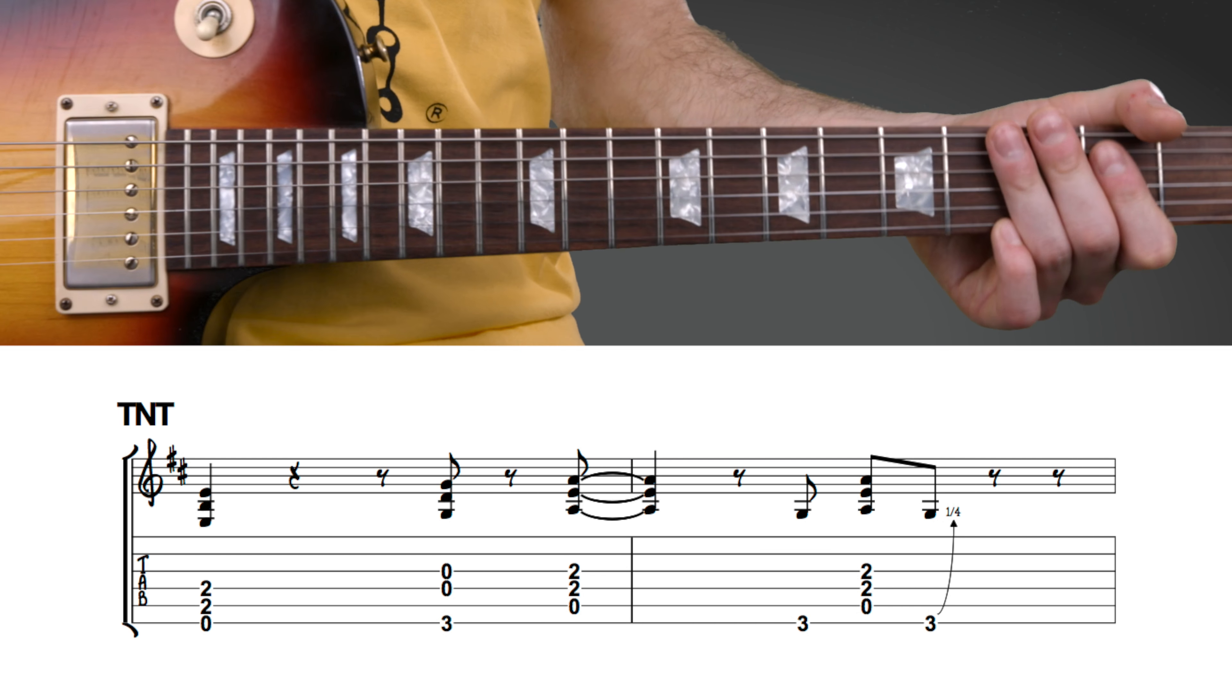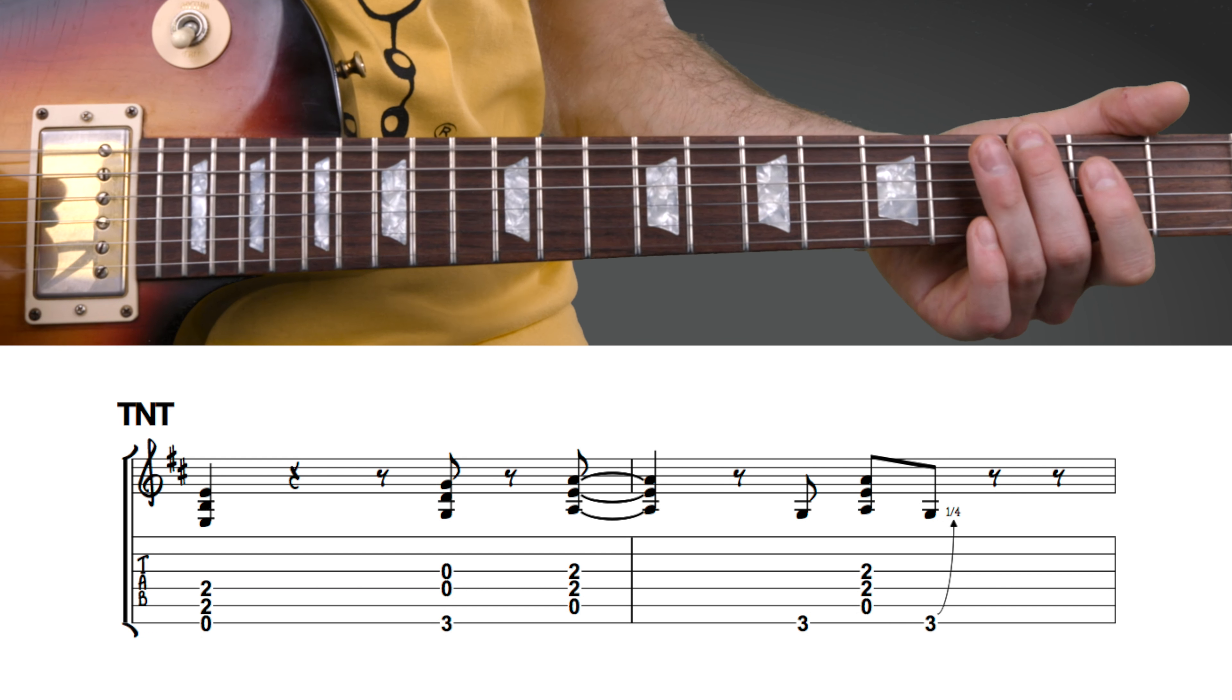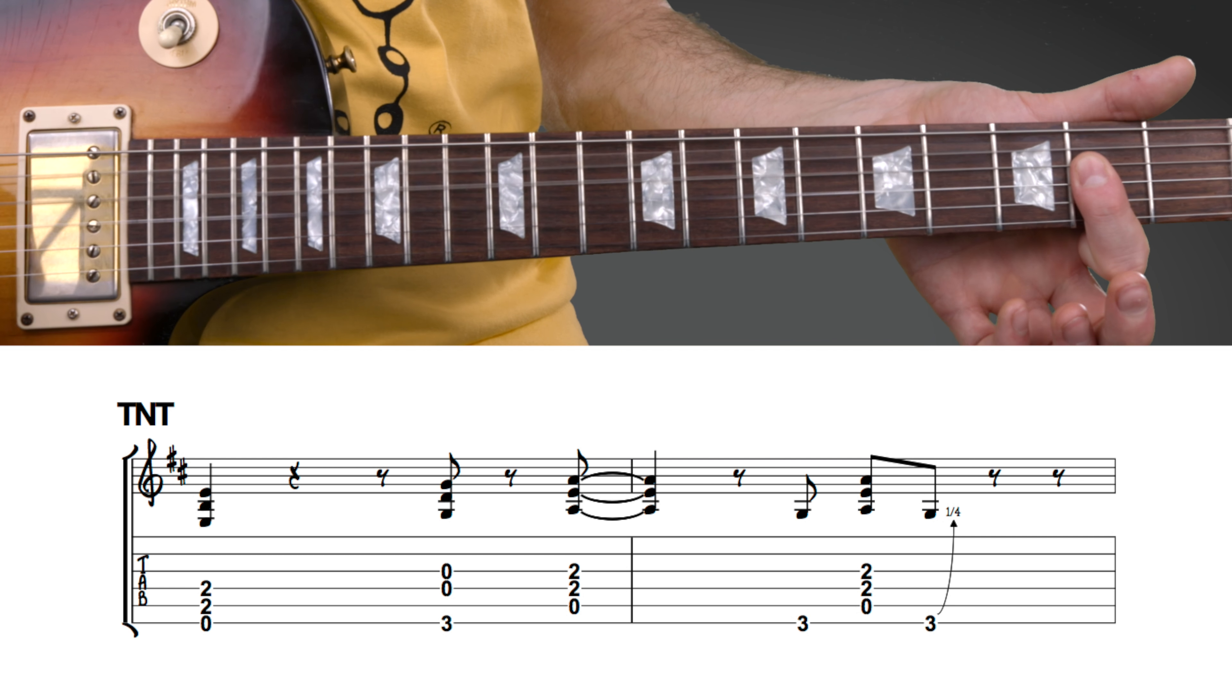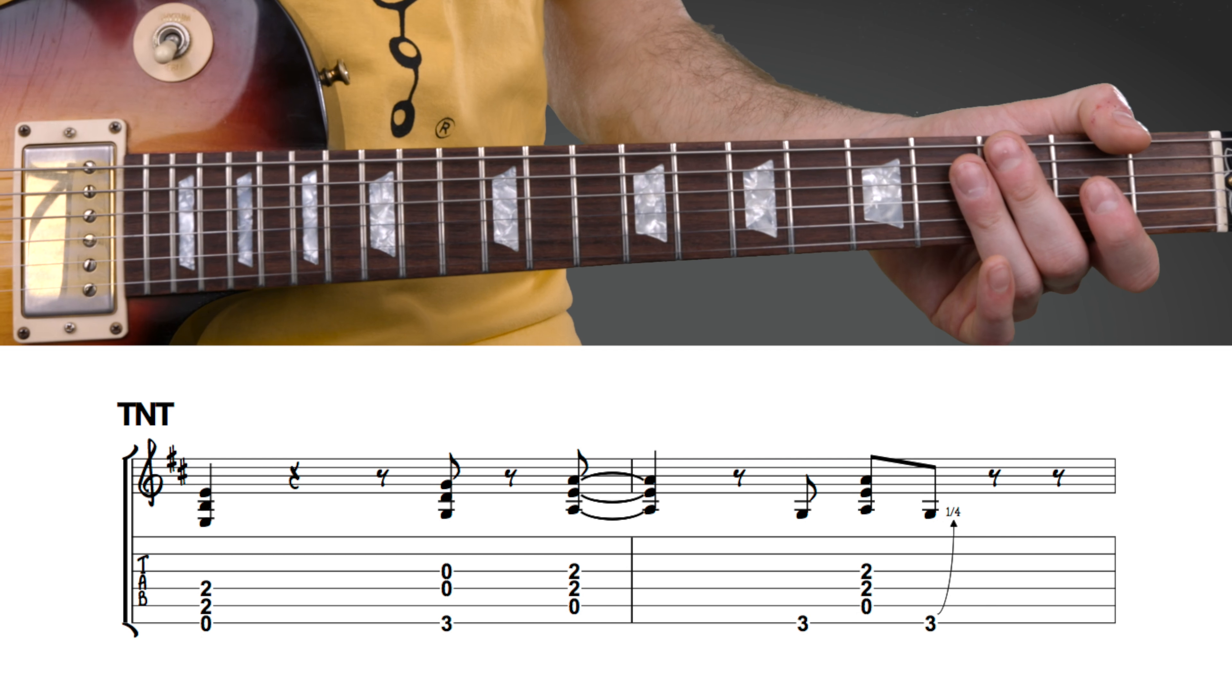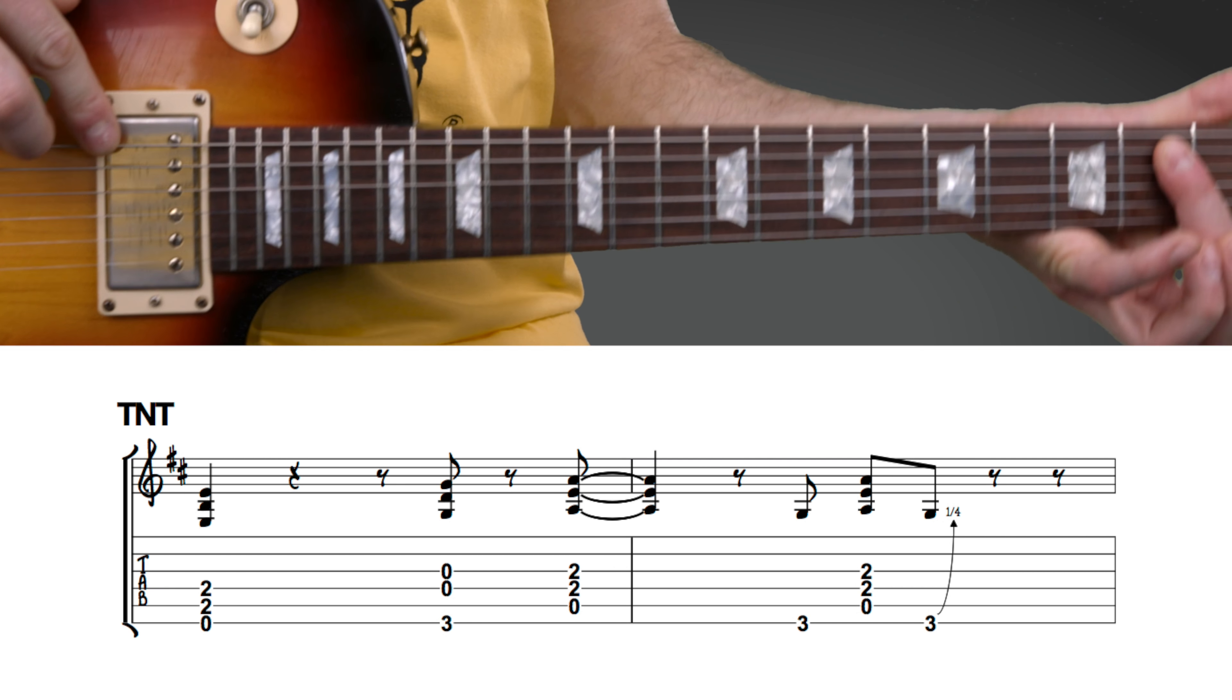Song number two is TNT and it goes like this. We play the top three strings of an E major chord, so it's open top, no fingers.